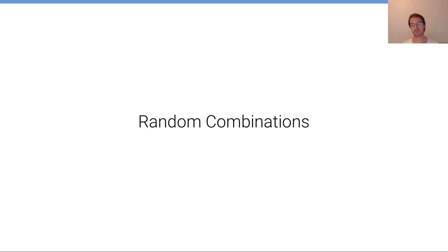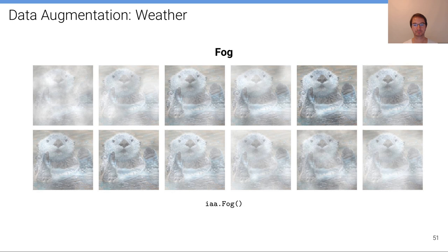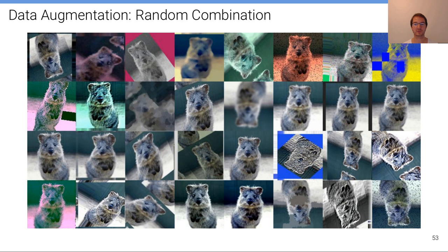In practice, you want to apply random combinations of these transformations to the entire dataset on the fly, so you don't need to store augmented datasets — you generate them during training. You draw a random mini-batch, then apply a random combination of effects from your defined generative process of transformations. This results in randomly transformed versions of all images in the dataset.